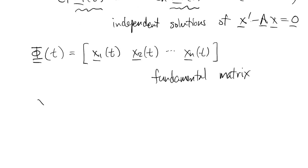Again, what we saw in the theory was that we could also write the homogeneous solution as phi of t times a vector c of arbitrary constants.